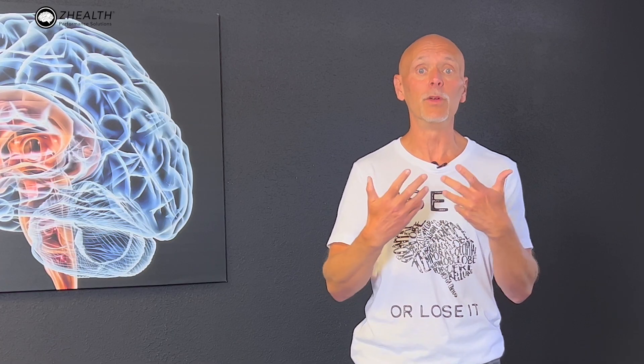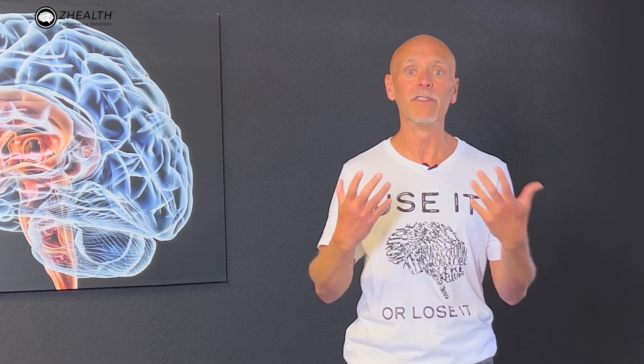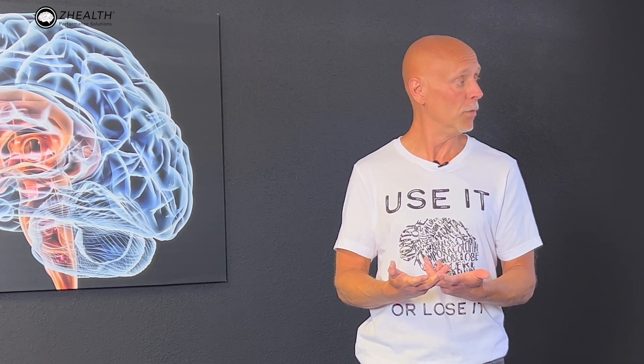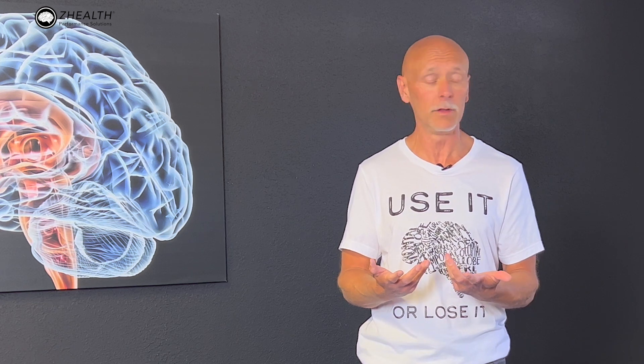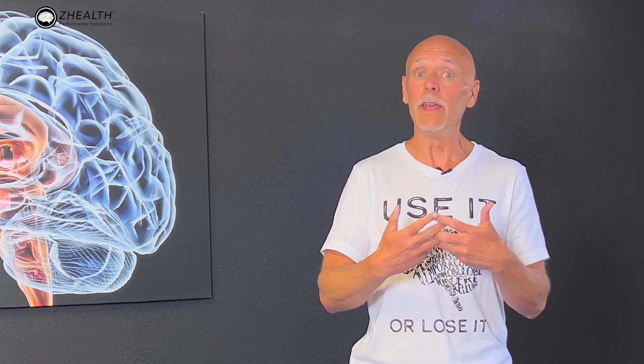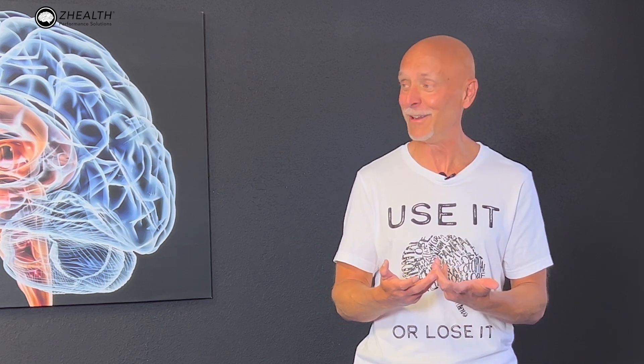For example, if you're doing a mathematical version, you would do something called serial sevens. You begin at 100 and then as you begin moving, you count backwards by seven: 100, 93, etc. You do that for 30 seconds to a minute. If that's too difficult, you can also do serial threes: 100, 97, 94.